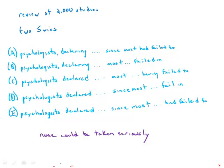First problem: 'the psychologists' seems like a subject of the sentence, but what verb is it a subject of? Notice that it's followed by a participle, 'declaring,' and then it's followed by a bona fide verb. This is a subject that needs a verb. Just being followed by a participle — a participle modifies it, but it doesn't take the place of a verb. 'Psychologist declaring' — that's not a complete sentence. 'Psychologist declared' — that is the core of a complete sentence. So A and B are out.